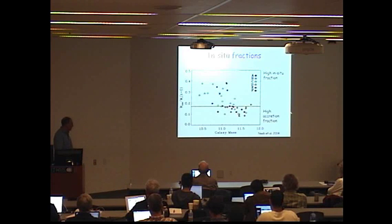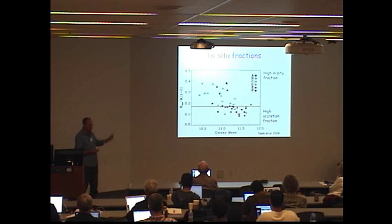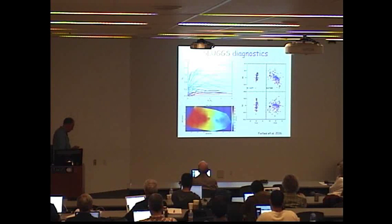Galaxies down here have a very high ex situ, a high accretion fraction. They tend to be the high mass galaxies, classified classes sort of D, E, F. We've essentially done the same thing with our sample. We have angular momentum profiles for our galaxies, we have 2D velocity and velocity dispersion maps.